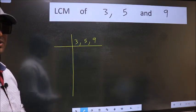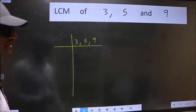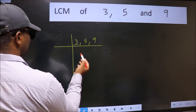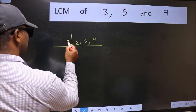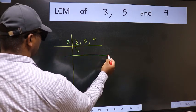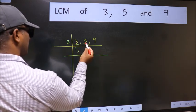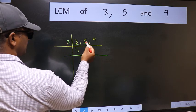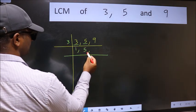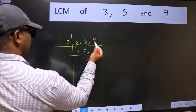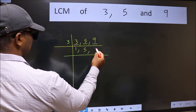Now we should focus on the first number which is 3 here. 3 is a prime number so 3 goes into 3. The other number 5 is not divisible by 3 so we write it down as it is. The other number 9, when do we get 9 in 3 table? 3 times 3 is 9.